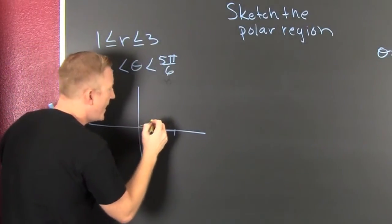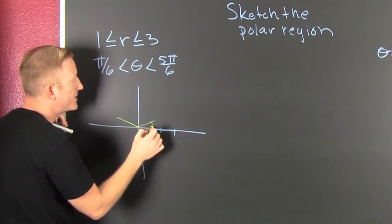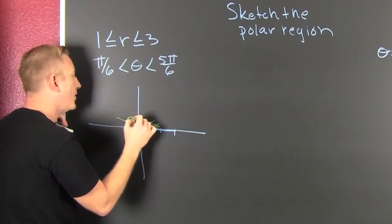And on the same side over there, I have 5π/6. Where this is my π/6, and this is my 5π/6.